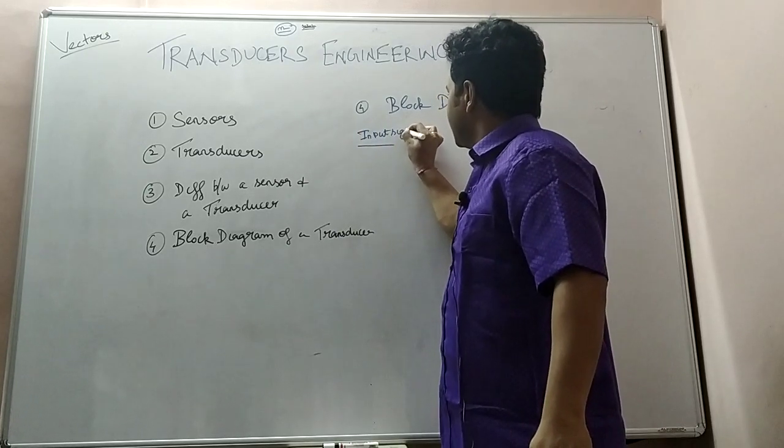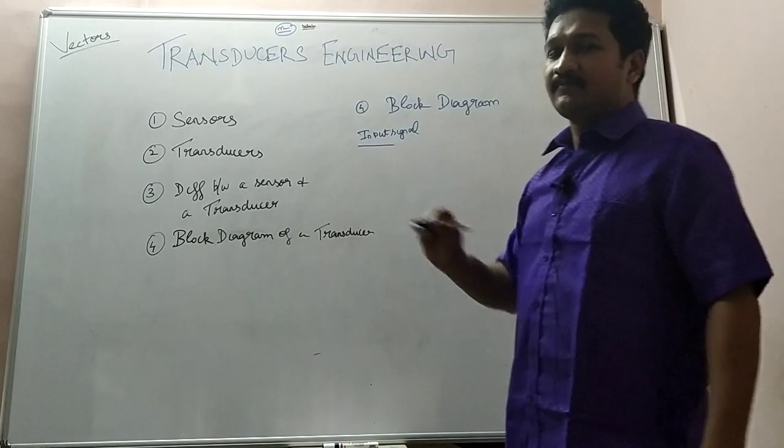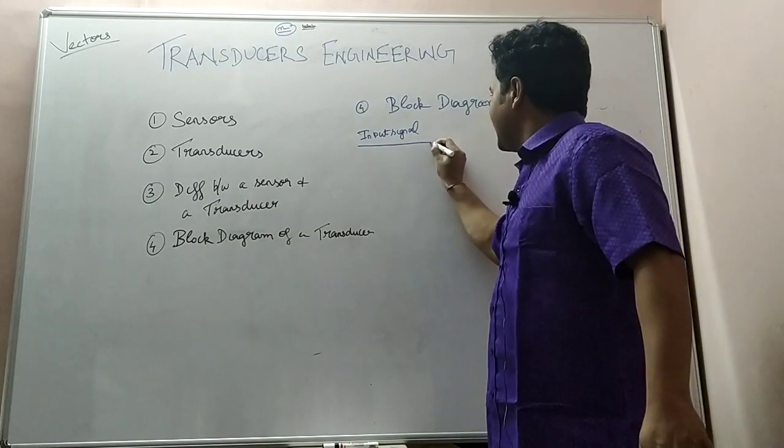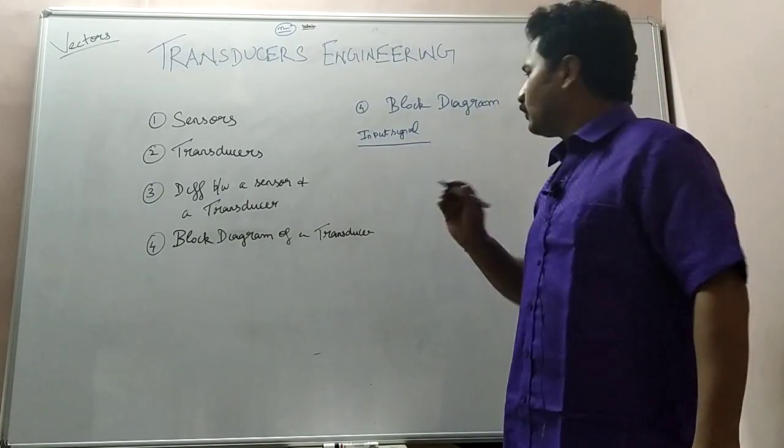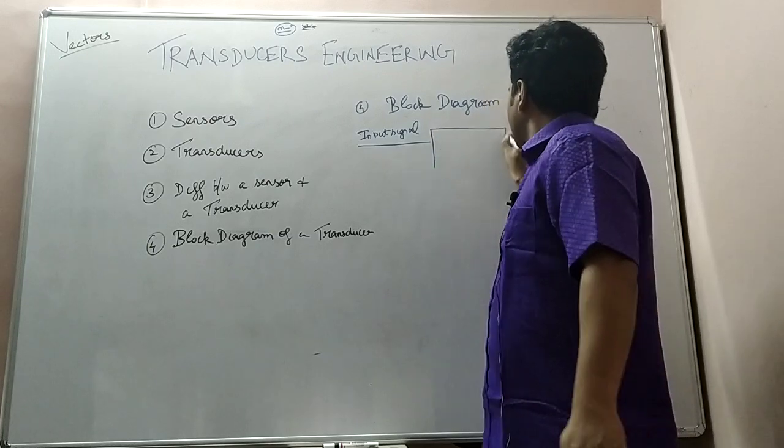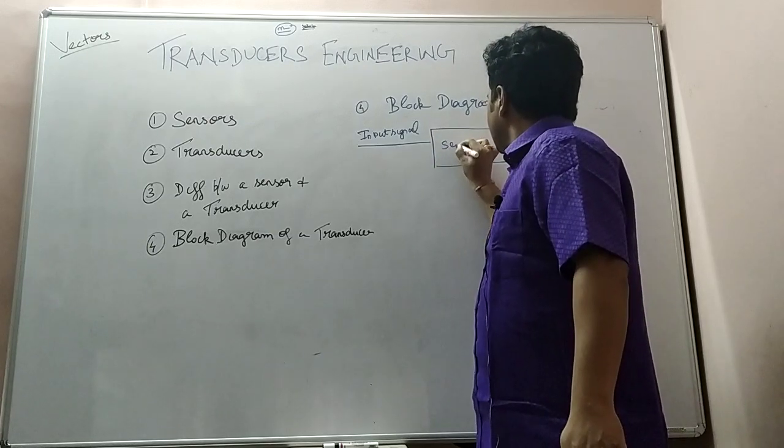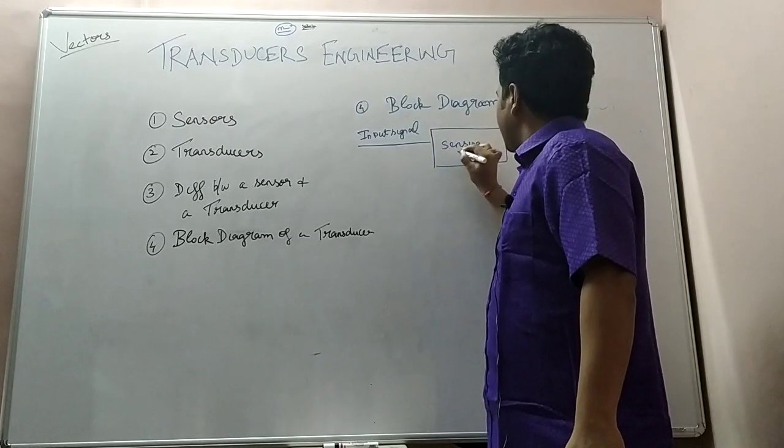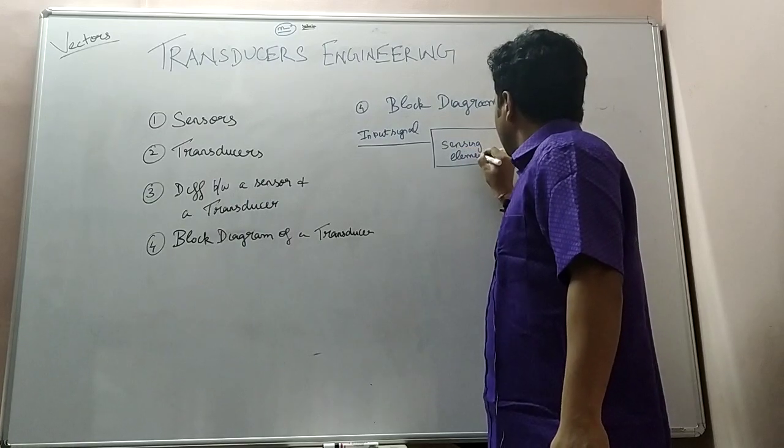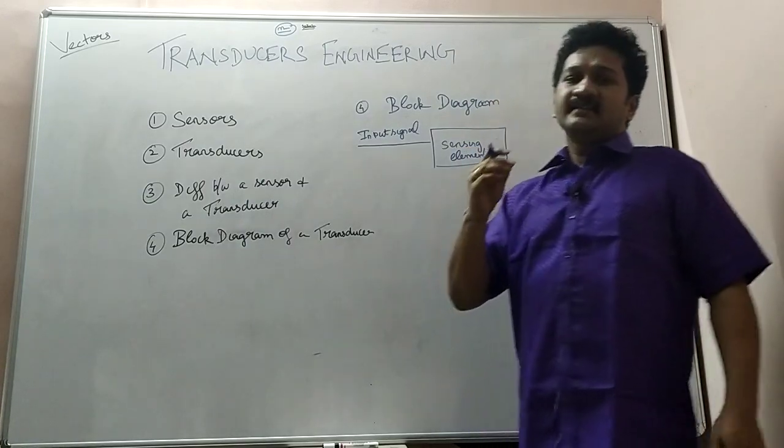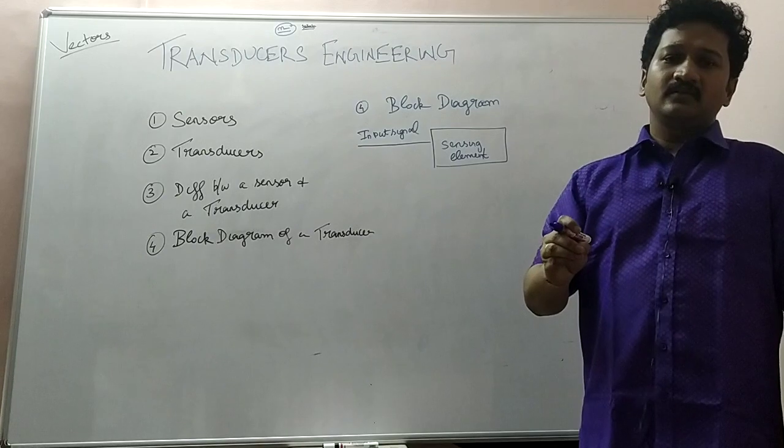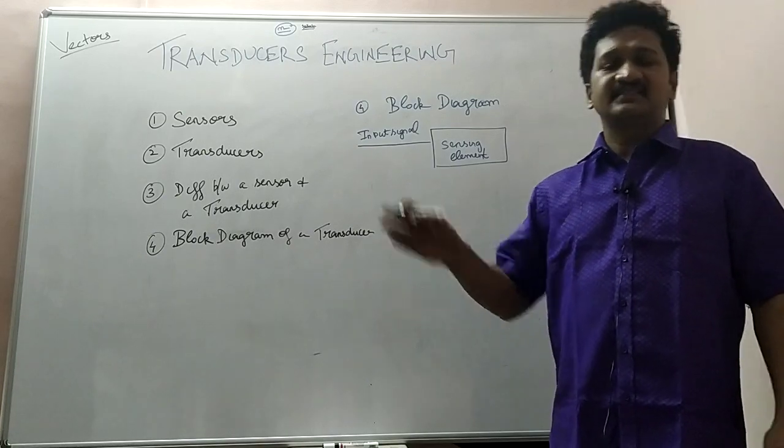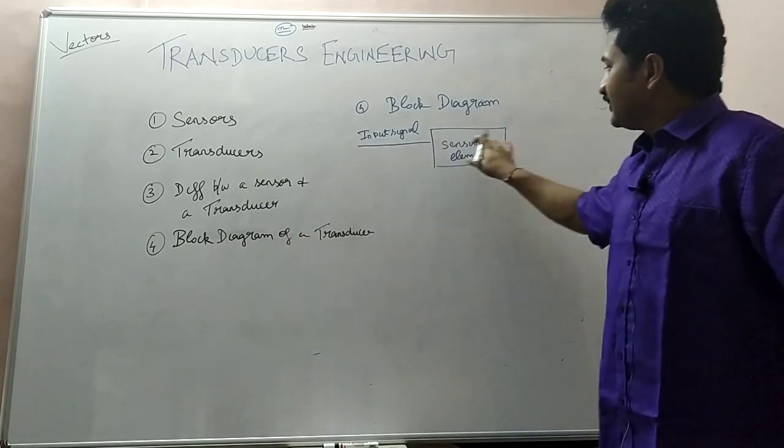Input signal is given to the transducer. Transducer has two elements. First one is the sensing element. For any signal to be converted from one form to another form, first it has to be sensed. So we use sensing element.